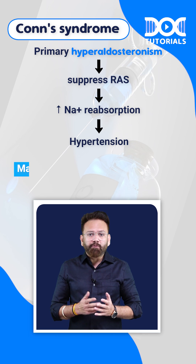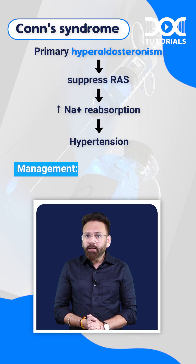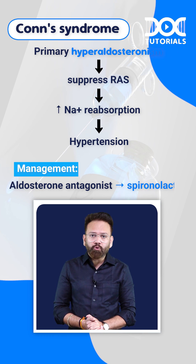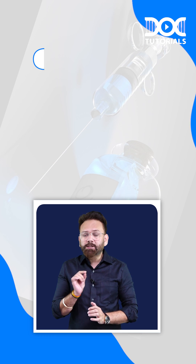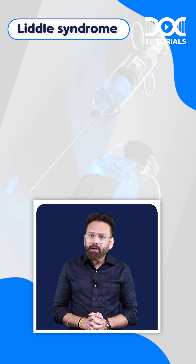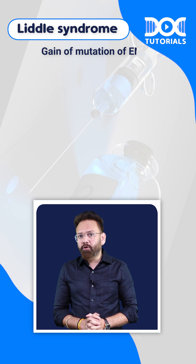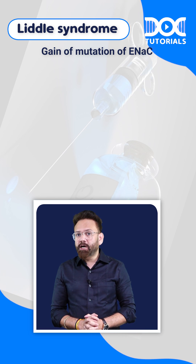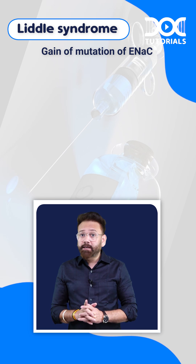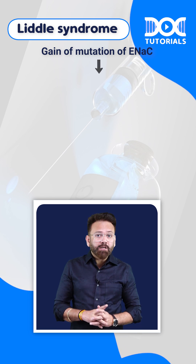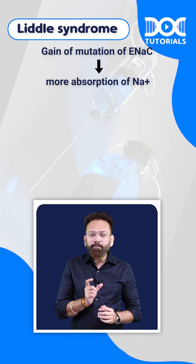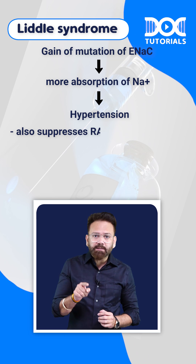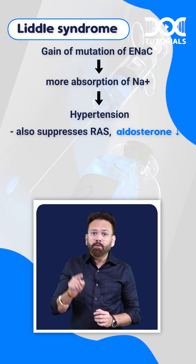The management of Conn syndrome can be an aldosterone antagonist like spironolactone. Liddle syndrome, on the other hand, is due to a gain-of-function mutation of ENaC — the epithelial sodium channel. This causes more sodium absorption, leading to hypertension, and also suppresses renin and aldosterone.